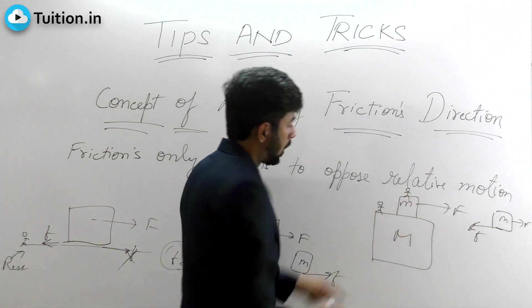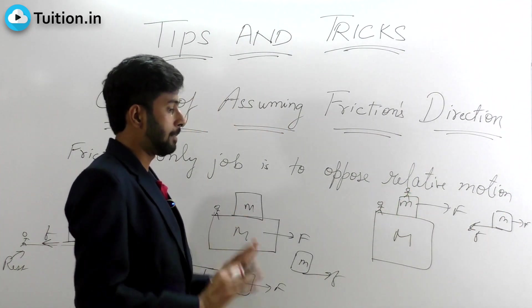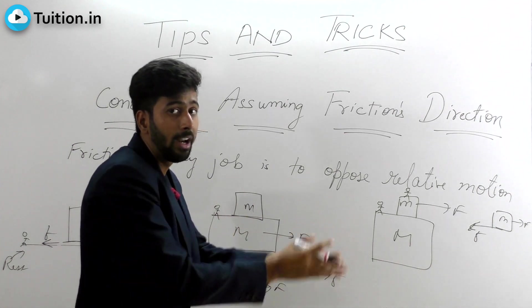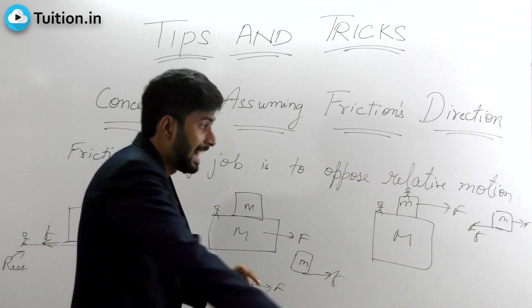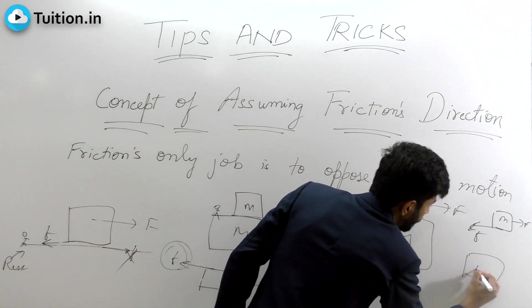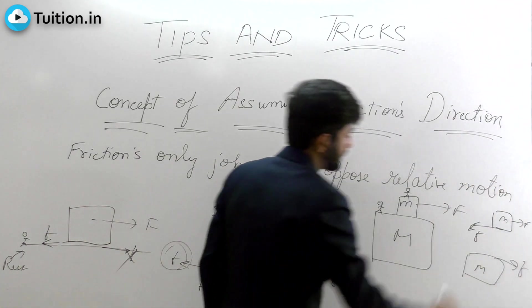But if I stand on small m, then how will capital M appear to move? Because I am on small m and small m is moving forward, I will not see small m moving forward. I will see capital M moving backward. So because capital M is moving backward, friction will act in this direction.